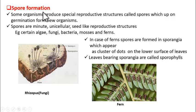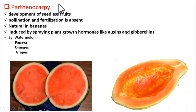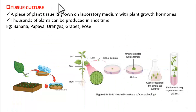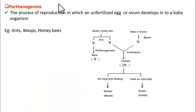Good morning students. Today we shall learn about the next three methods of asexual reproduction: spore formation, parthenogenesis, and tissue culture. Shall we start? Yes.